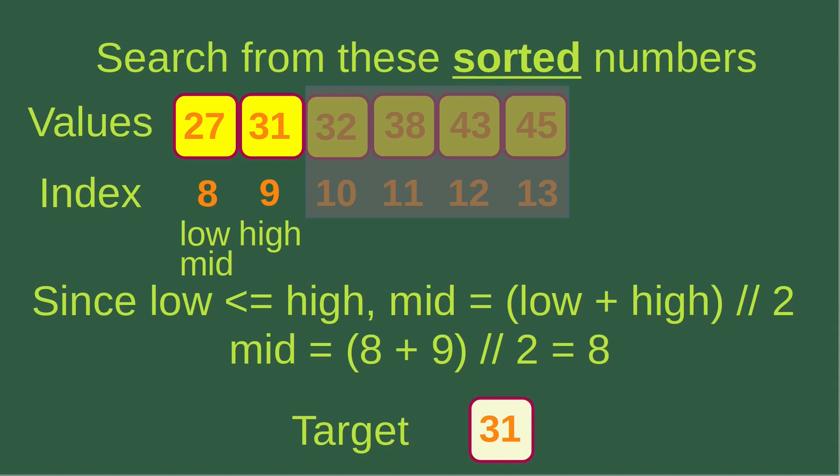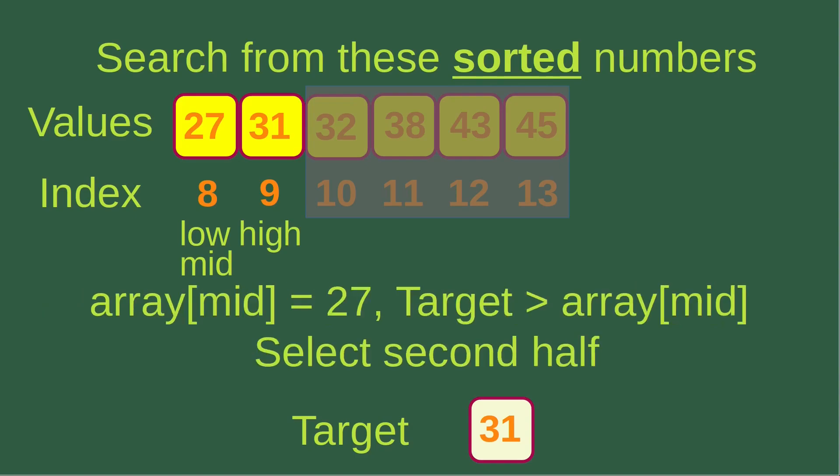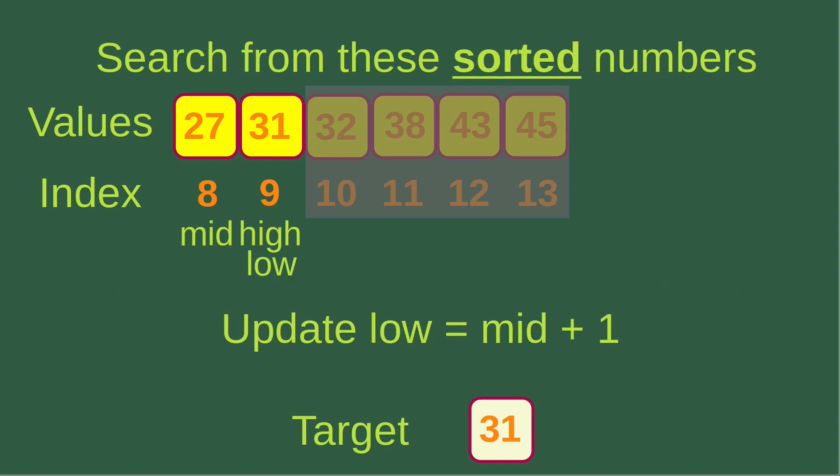Now the new portion only has two elements. Since the low index is still smaller than or equal to the high index, I can still use the formula to find out the mid-element, which corresponds to element 8, which is 27. The mid-element is 27, and we can see that the target is larger than or equal to the mid-element. In this case, we have to choose the second half of the portion. We update the low index to mid plus 1, so now the low index becomes 9, which is actually equal to the high index.